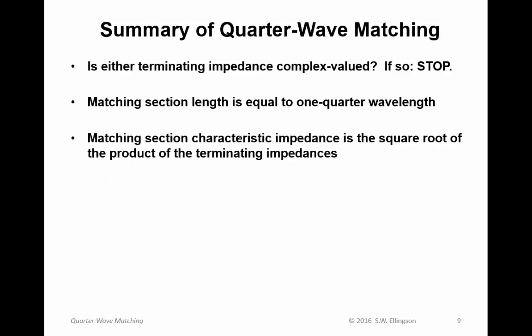The matching section characteristic impedance is the square root of the product of the terminating impedances. So, you figure out which impedance you're converting from and to, multiply those together, take the square root, and that is the characteristic impedance of the transmission line that you need.